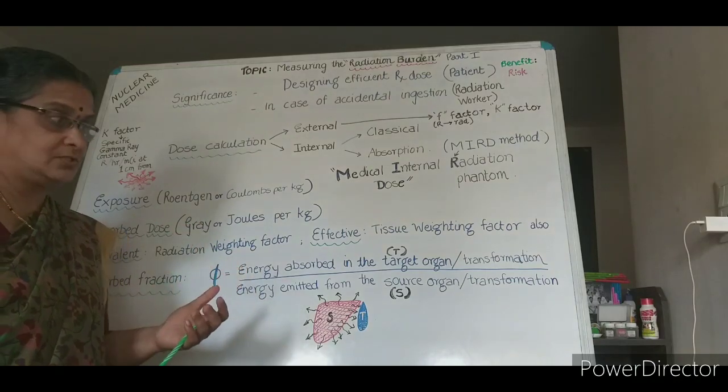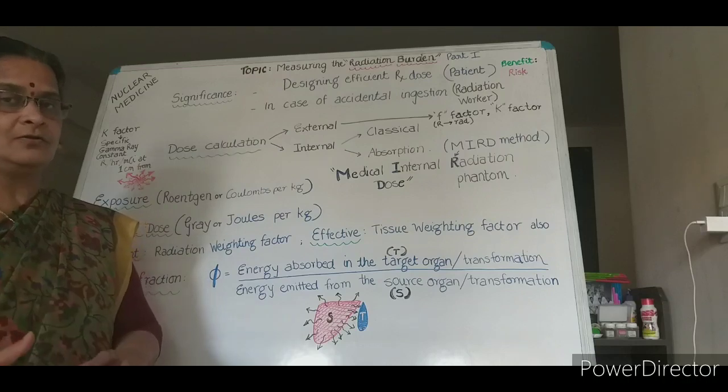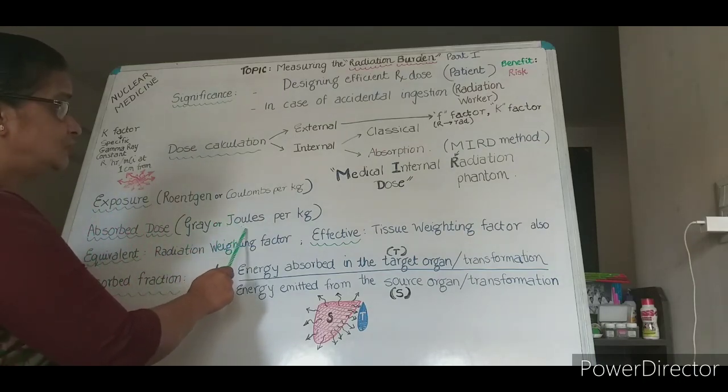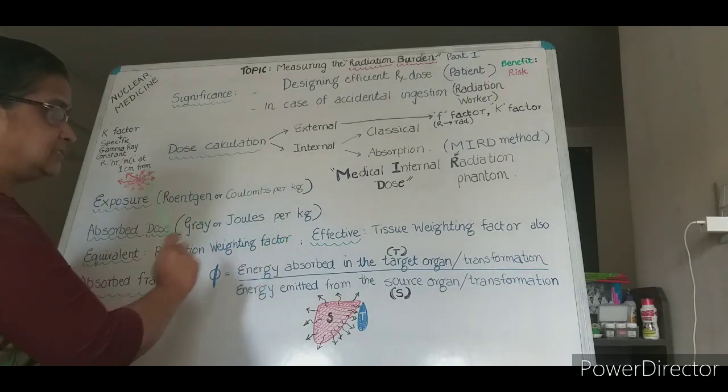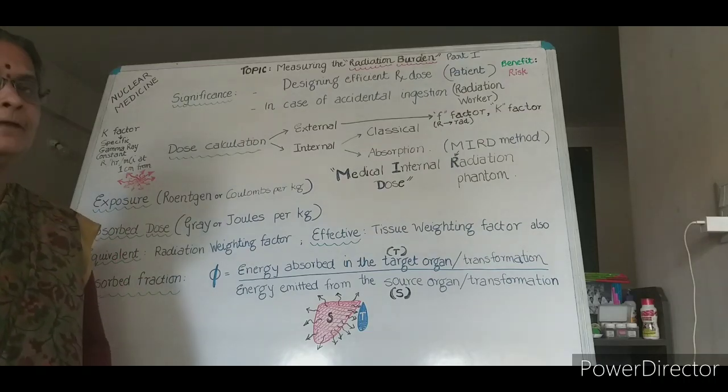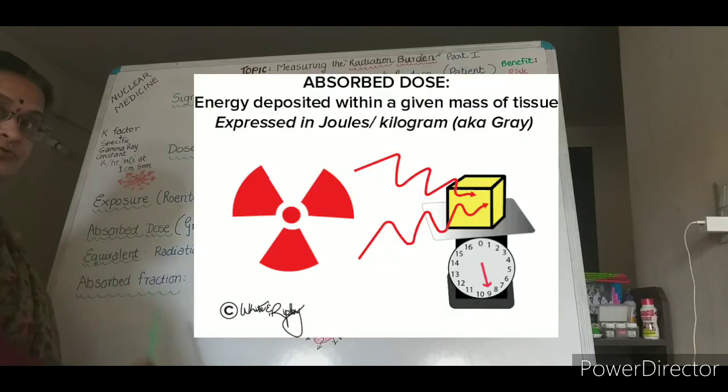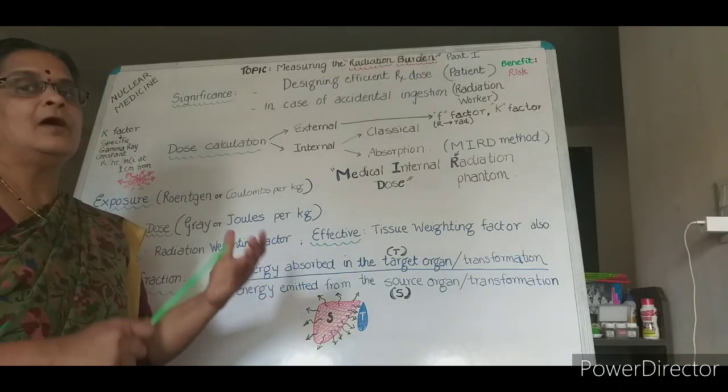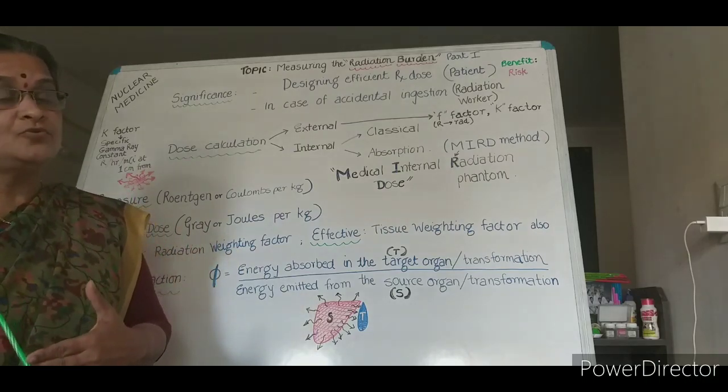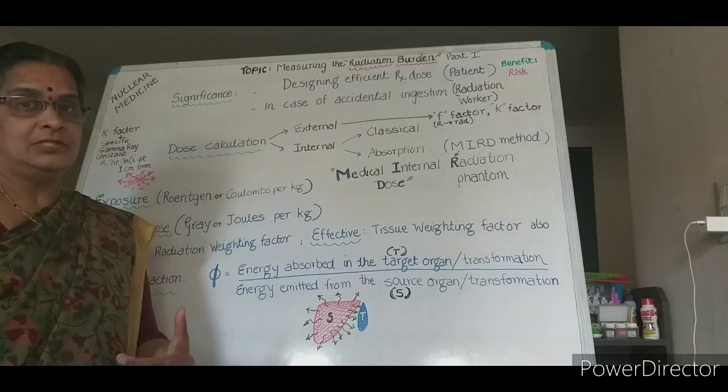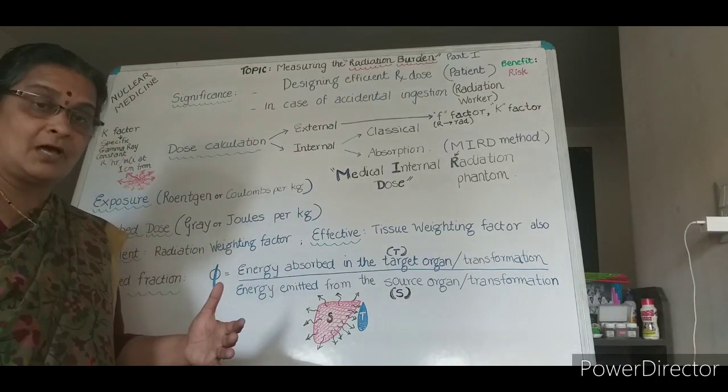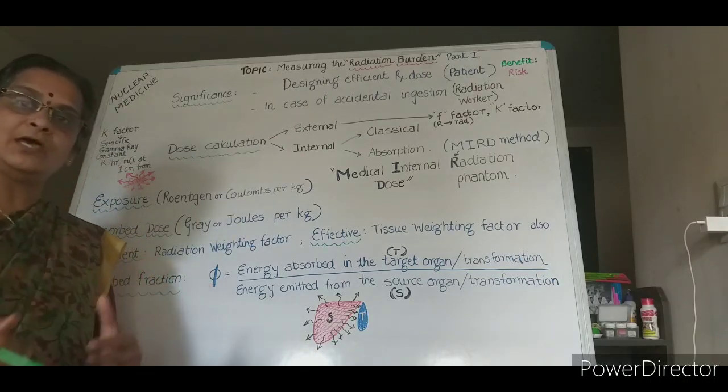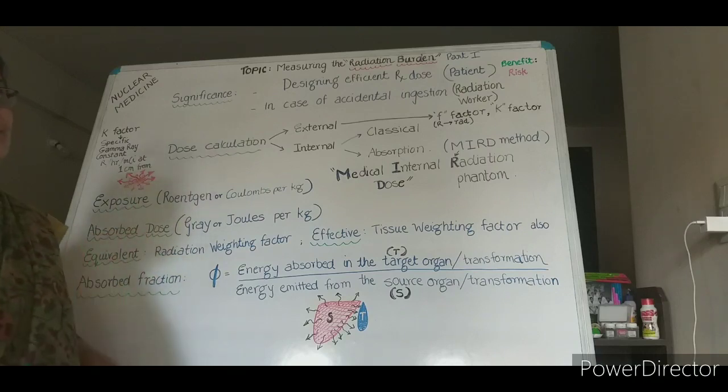When absorbed dose is related to the receiving organ or tissue or material or medium in which this energy is absorbed, that is in the form of joules per unit mass, that is kilogram, and that has SI unit of gray. Now, this exposure and absorbed dose I can give you an analogy of our examination paper. The question paper is like exposure, and the absorbed dose, whatever you write in the answer paper, is finally going to give you the output. So the examination can be out of 100 marks, but whatever you have written may or may not be fully out of 100 marks.